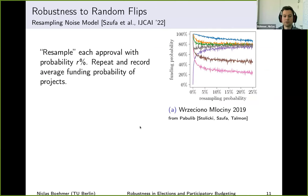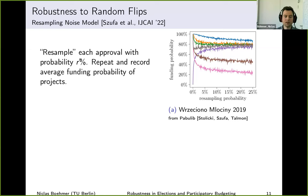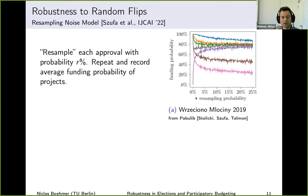We use a similar approach, but instead of swapping adjacent candidates we now perform flips — turning one approval into disapproval or vice versa for some voter-candidate pair. We adopt the resampling noise model from the literature, which resamples each approval with probability r percent. We do this, look at which projects get funded under Greedy AV, repeat 1,000 times, and record the average funding probabilities of the projects. This gives us plots analogous to the earlier line plots — x-axis is resampling probability, y-axis is funding probability.